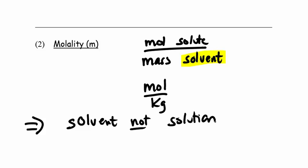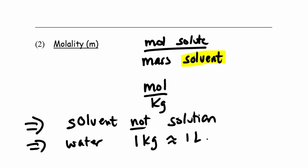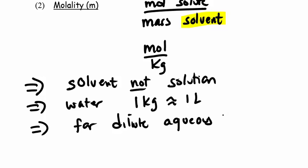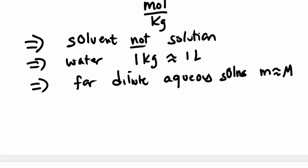Molality is the only unit which uses the solvent itself, and because it's the mass, it doesn't change with temperature. When water is the solvent, one kilogram is approximately one liter, so for fairly dilute aqueous solutions, the molality is approximately equal to the molarity. Molality will be used in colligative properties, which we're going to be talking about in another video.